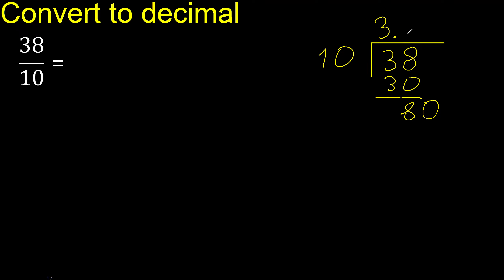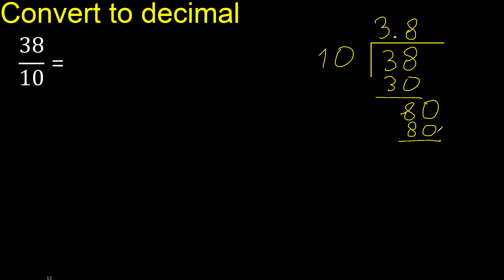Then, multiply by which number? Multiply by 8 is exactly 80. It is not greater. Subtract 0. Therefore, finish.